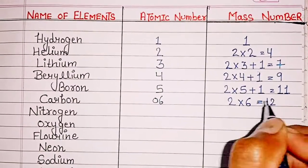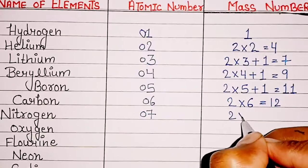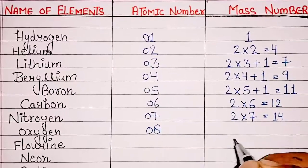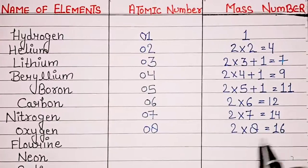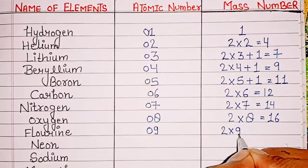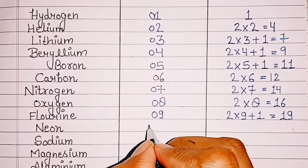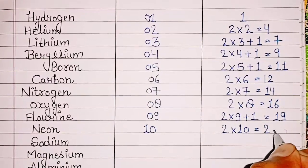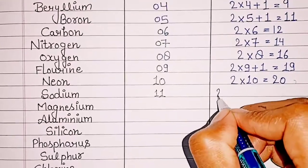Carbon: atomic number 6, mass number 2 x 6 = 12. Nitrogen: atomic number 7, mass number 2 x 7 = 14. Oxygen: atomic number 8, mass number 2 x 8 = 16. Fluorine: atomic number 9, mass number 9 + 1 = 19 (approximately). Neon: atomic number 10, mass number 2 x 10 = 20.